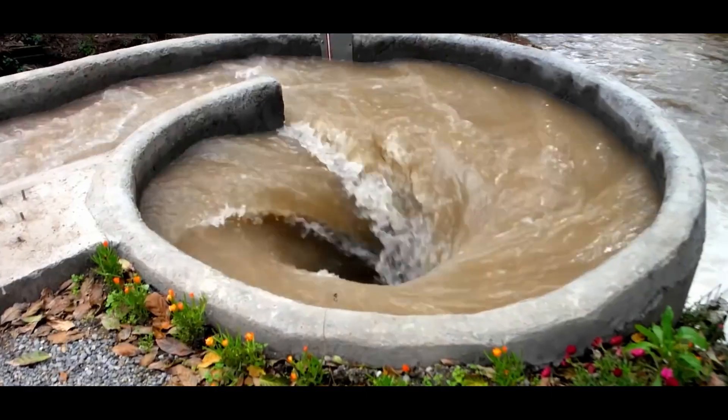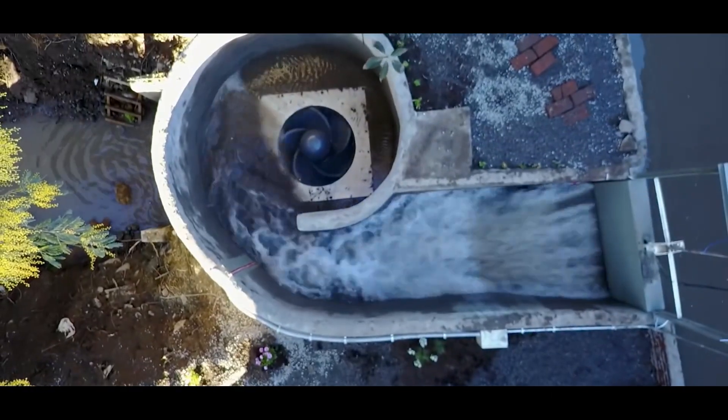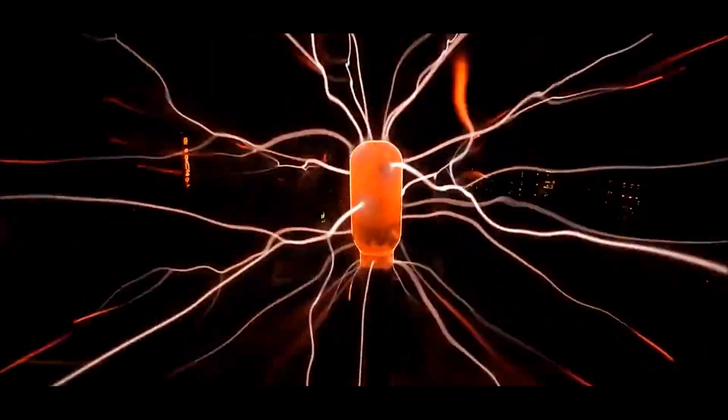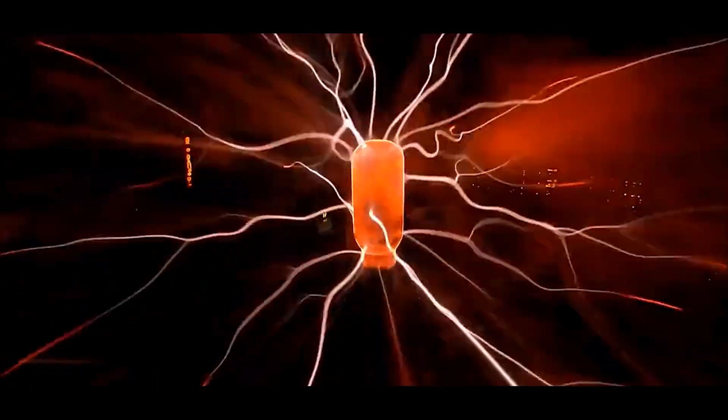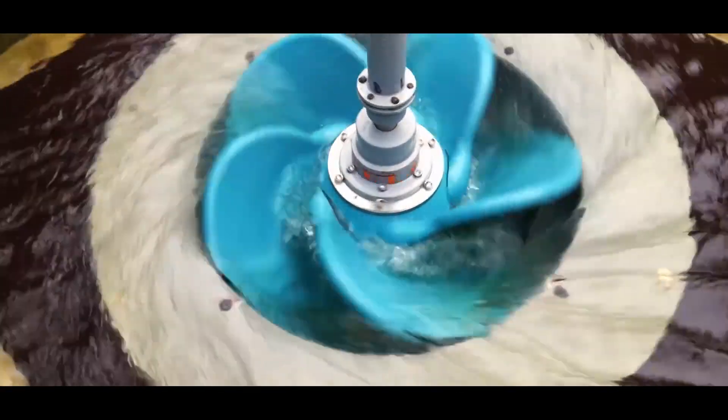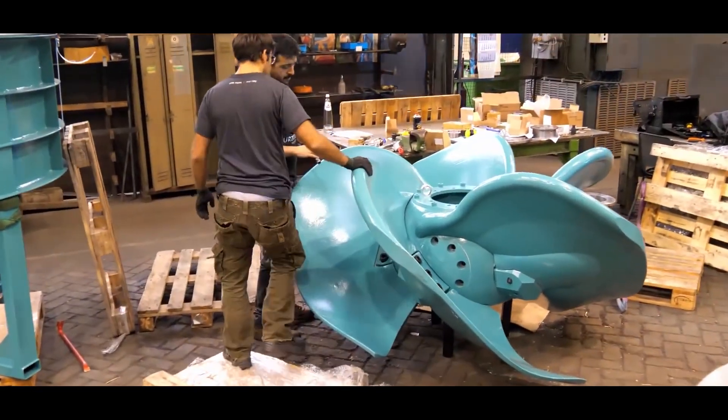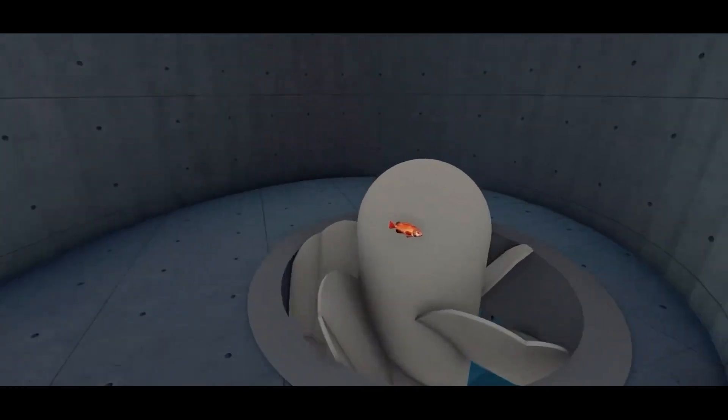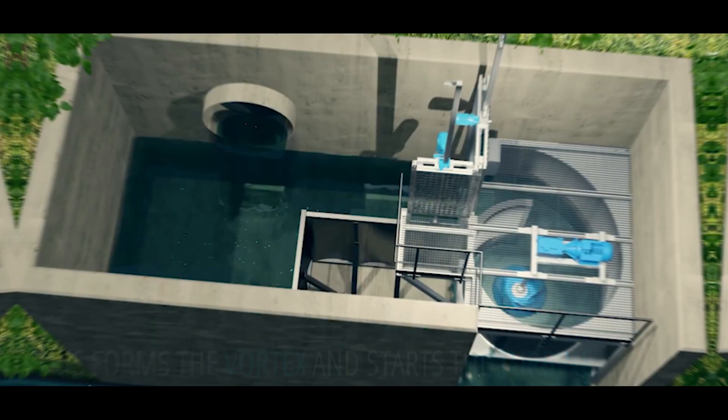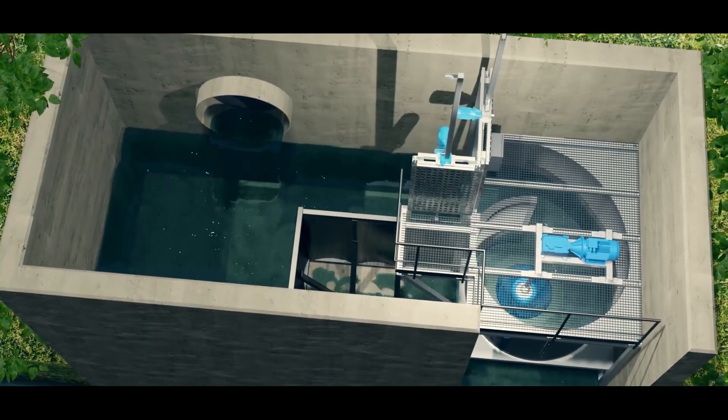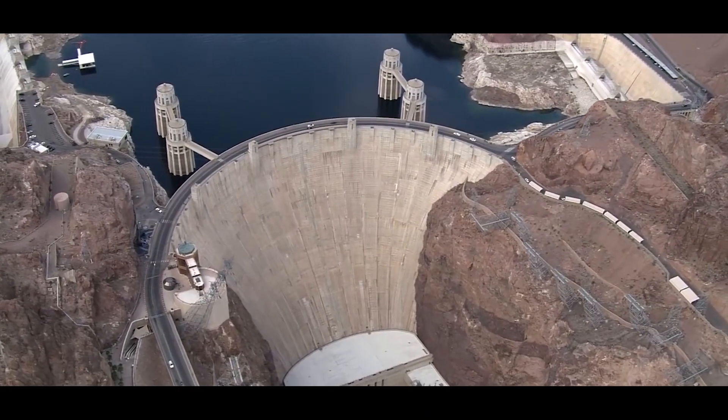These vortices, created by natural constrictions or the shape of the riverbed, are a potent source of power waiting to be unleashed. The absence of blades is more than just a sleek design choice. It offers a multitude of advantages. No blades mean no risk of injury to aquatic life. This makes turbulent turbines a game-changer for eco-conscious hydropower projects.